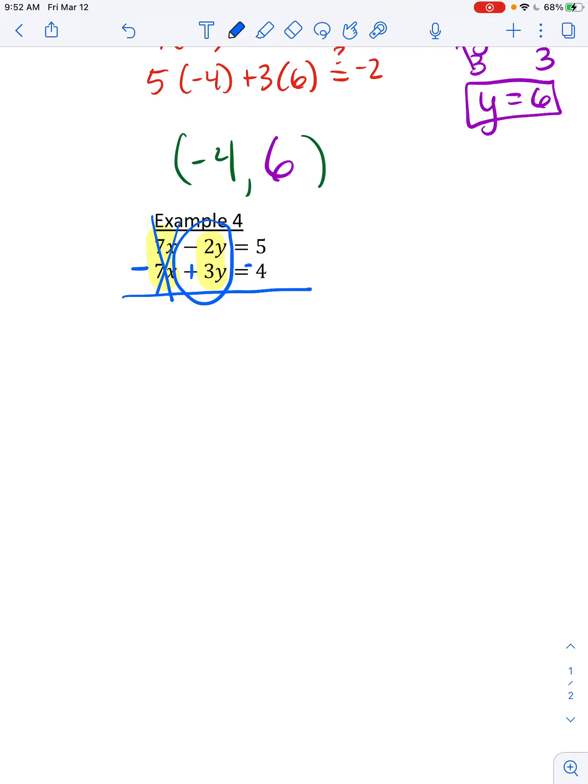These, I have a negative 2y plus 3y, which ends up being a positive 1y. Positive 5 minus 4 ends up being 1. So that's easy peasy. I end up already knowing that the y coordinate is 1.